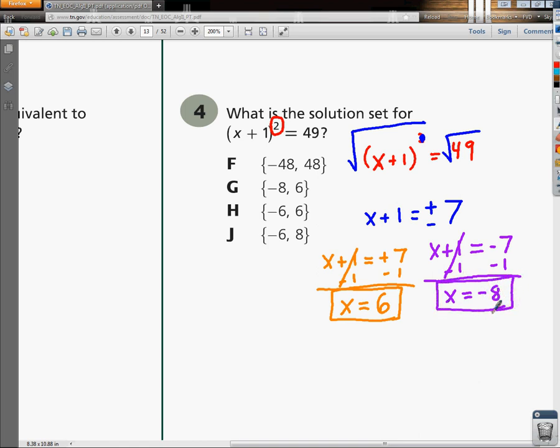So now that we have these as our two answers, we need to look and see that F is not going to be correct, G is going to be our correct answer, and of course these two are not going to be right. So letter G is going to be what our answer is going to be. Good luck!